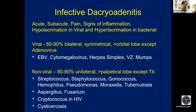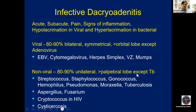In viral dacryoadenitis, 80 to 90% are bilateral and more often symmetrical. They occur more in the orbital lobe of the lacrimal gland except adenoviral dacryoadenitis, which occurs with concurrent conjunctivitis or in the resolving phase. Other etiologies include Epstein-Barr virus, Cytomegalovirus, Herpes simplex virus, Varicella Zoster virus, and Mumps. In non-viral dacryoadenitis, 80 to 90% are unilateral, mostly involving the palpebral lobe except tuberculosis.